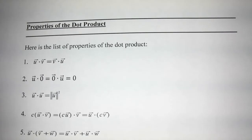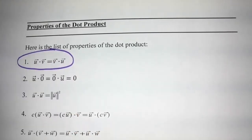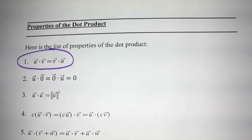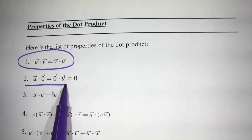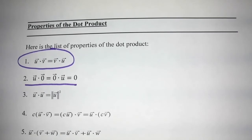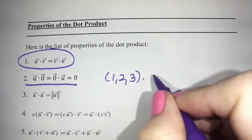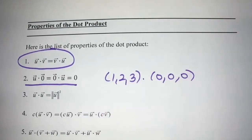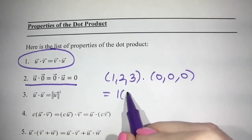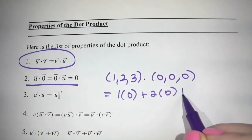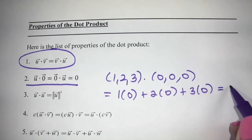Properties of dot product. Property 1: we can dot in any order — u dot v and v dot u are the same. That's because multiplying 1 times 2 or 2 times 1 gives the same answer. Property 2: if we dot with the zero vector, we get the answer zero. For example, (1, 2, 3) dotted with the zero vector gives 1 times 0 plus 2 times 0 plus 3 times 0, which is zero.